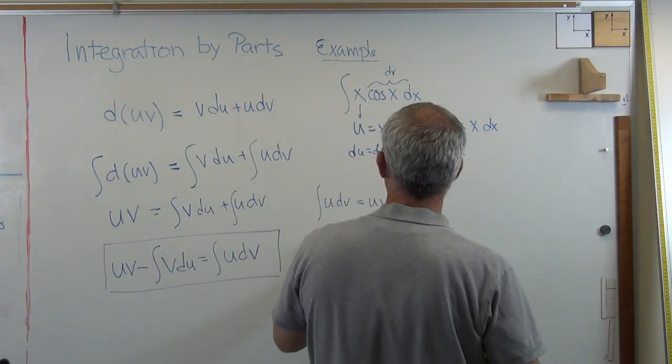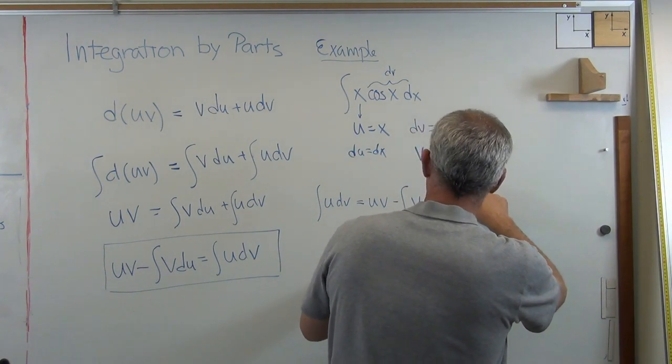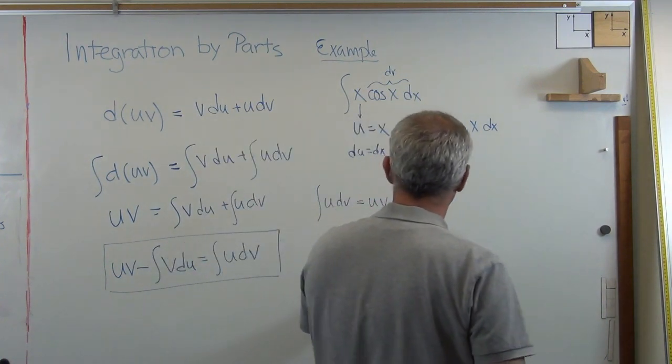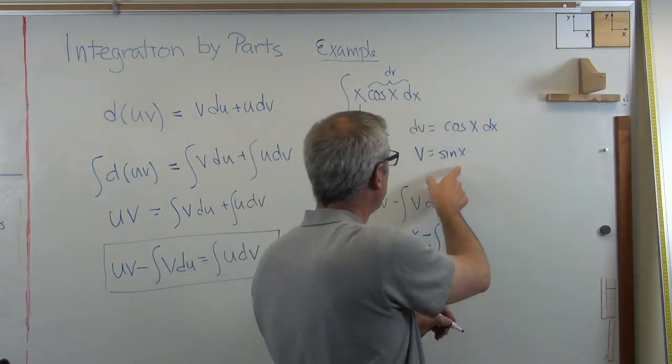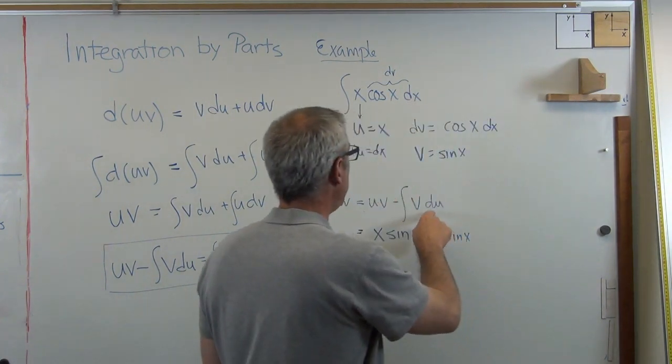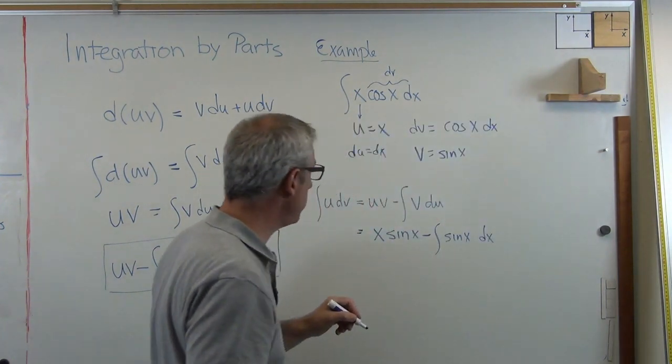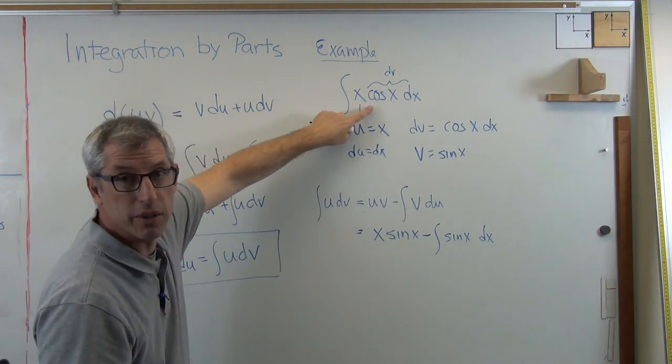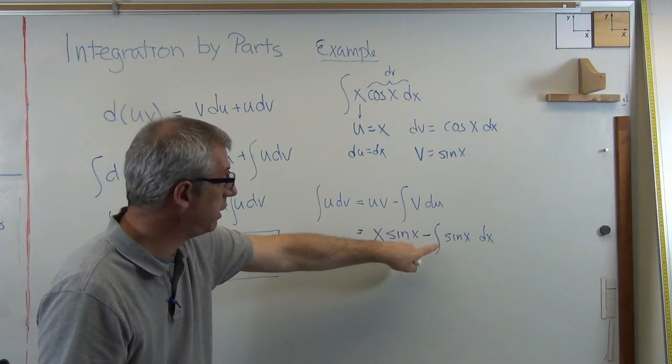All right, so u v. u is x, v is sine x. So that's u v right there. That's easy. Minus the integral of v, which is sine x, times du. Well, du equals dx. Well, look at what just happened. I took an integral I did not know how to solve and turned it into an equivalent one I did know how to solve. This one's easy.